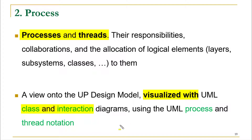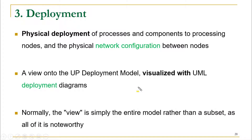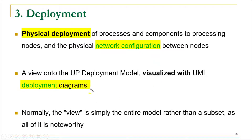Using UML process and thread notation — when we talked about interaction diagrams and class diagrams, we noted that processes and threads can also be represented there. In the deployment view, we describe the physical deployment of the system, much like a deployment diagram and communication diagram, showing the physical arrangement of nodes and their network configuration. This is represented using deployment diagrams.